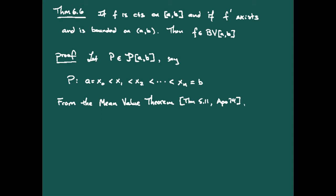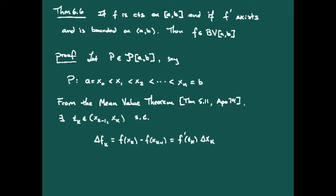In our book we reference this back to Theorem 5.11. What the mean value theorem says is that for any sub-interval [x_{k-1}, x_k], there exists a t_k in the interior such that Δf_k — which is f(x_k) minus f(x_{k-1}) — equals f′(t_k) times Δx_k. The mean value theorem is really what makes this work in this case.